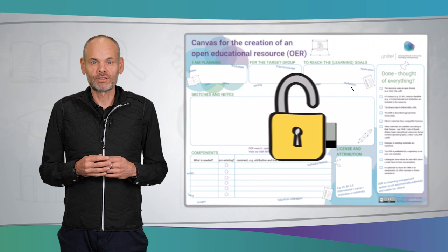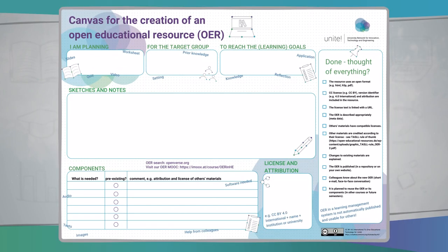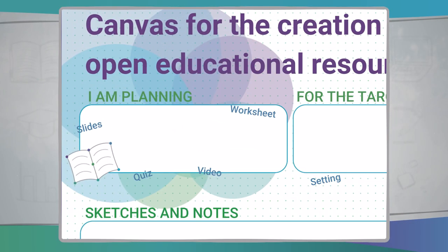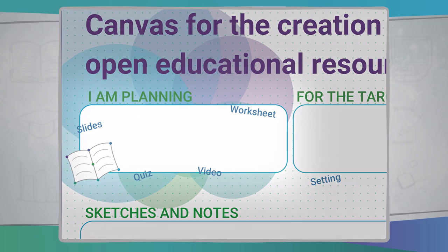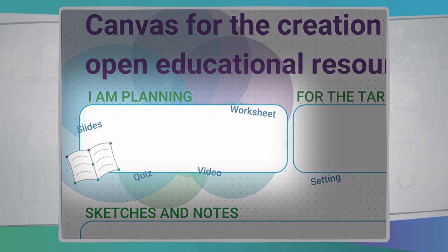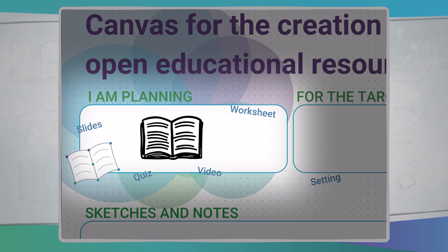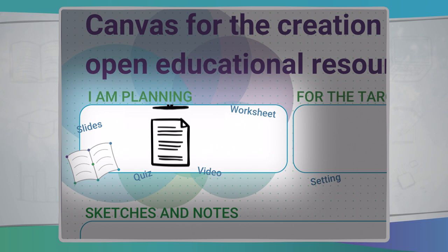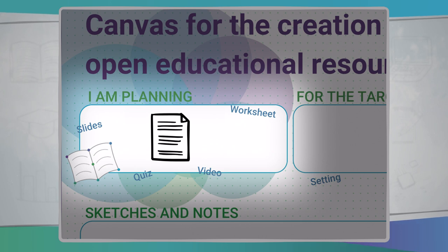The focus is on the learning resource itself. We first differentiate according to the type, i.e., what type the planned learning object should be — a textbook, an animation, a worksheet, or even an entire online course.